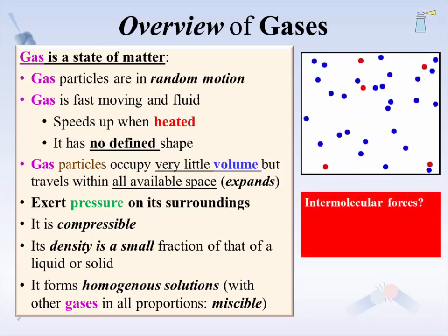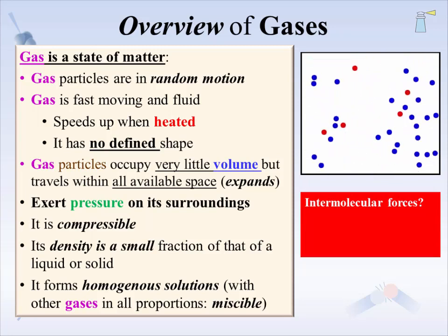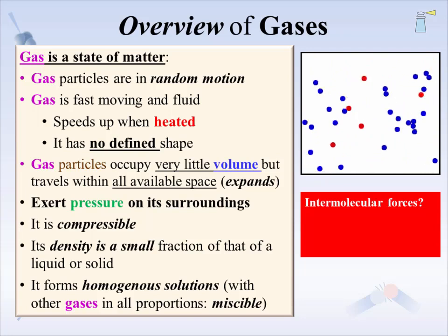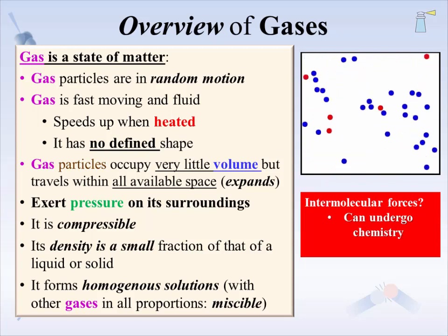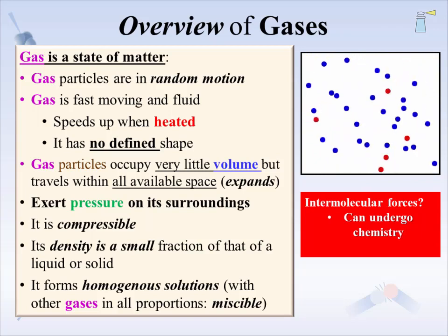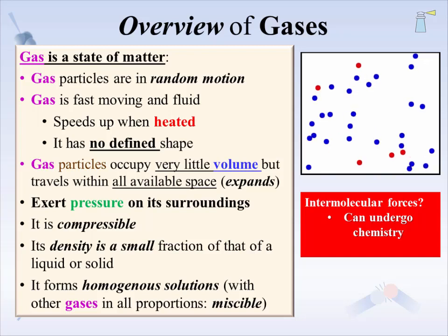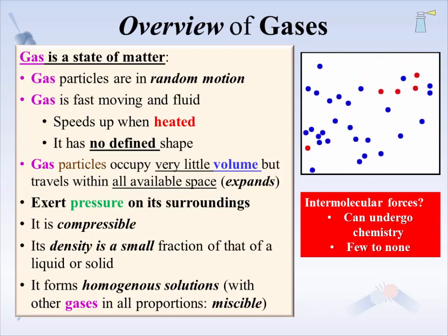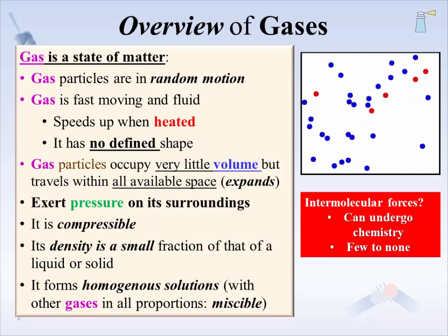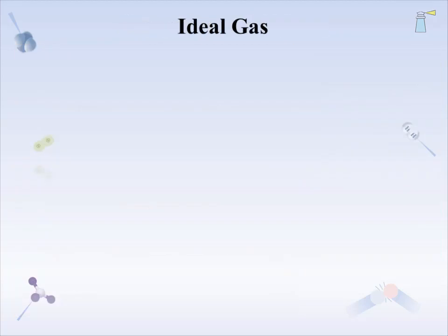What about intermolecular forces? Do gas particles form dipole-dipole or experience London dispersion forces, such as those seen in liquids and solids? Gases do undergo chemistry, so the answer is yes. However, when dealing with the properties of a gas, gas particles can be treated like rapidly moving and colliding tiny balls that have few to no intermolecular interactions. If they are not undergoing chemical reactions, they are modeled like colliding balls. This model is called an ideal gas — ideal because it is theoretical and not a completely accurate portrayal of a gas, yet in many instances it stands in quite well for a real gas.